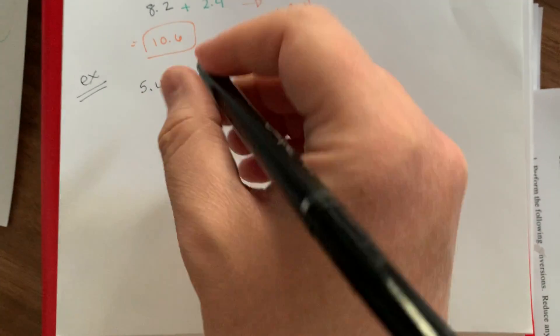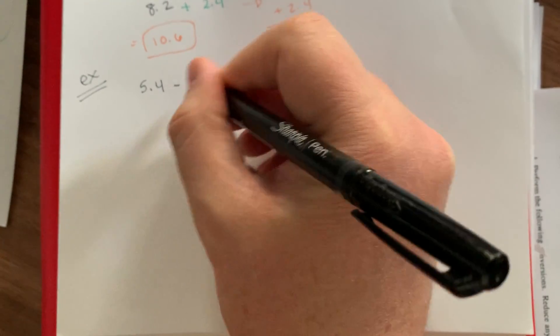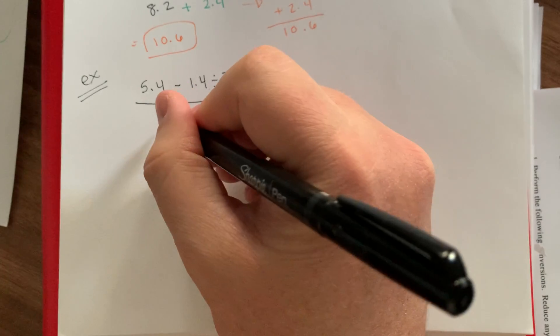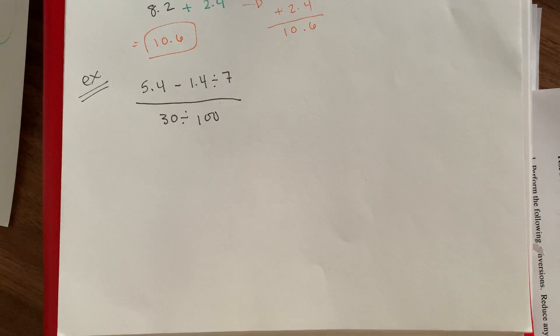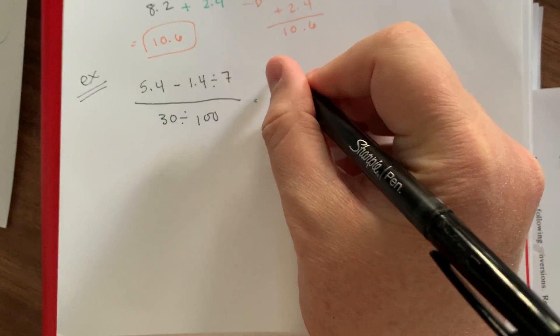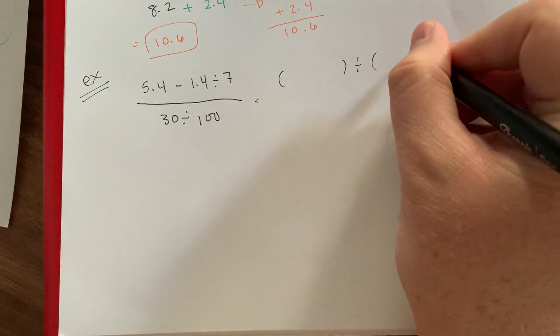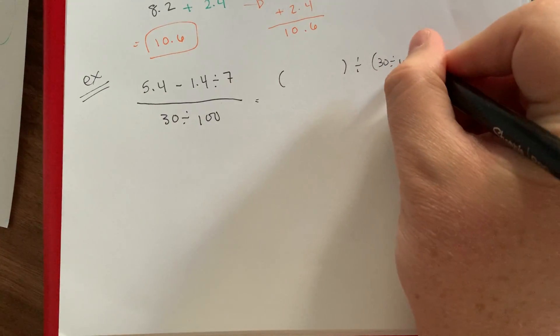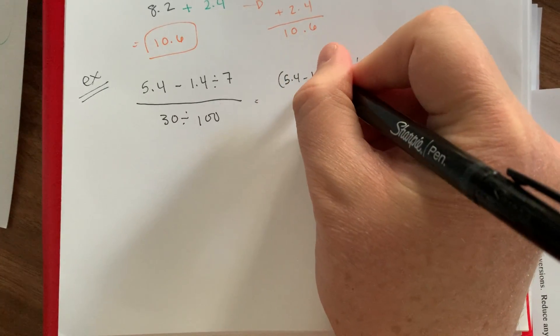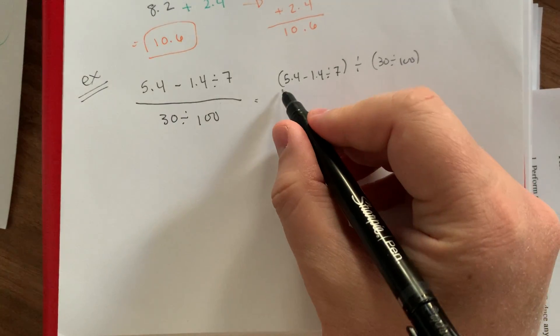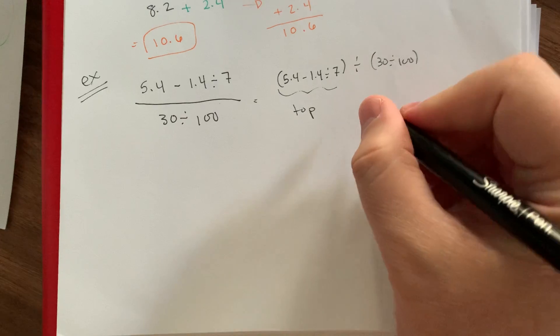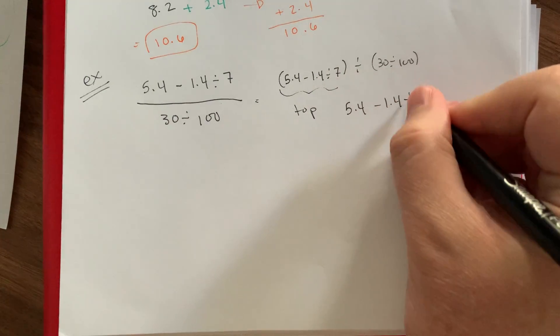Let's do 5.4 minus 1.4 divide by 7, and then that's all over 30 divided by 100. So in this case, our PEMDAS, this is really like everything up top divided by everything on the bottom. This sort of big division, the sort of fraction style division stack. We kind of want to do everything on top as its own thing and everything on the bottom as its own thing. So let's just isolate the top here first.